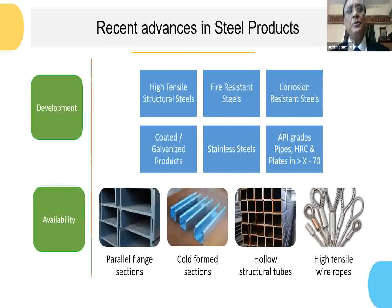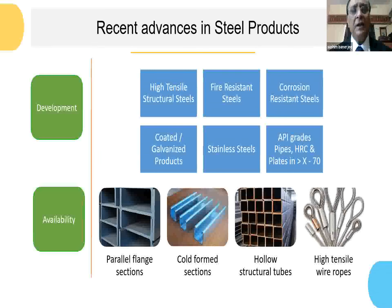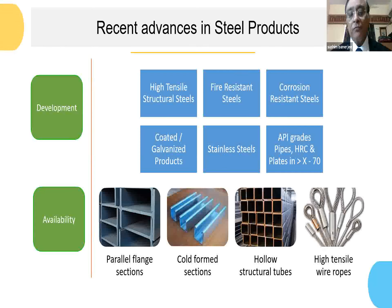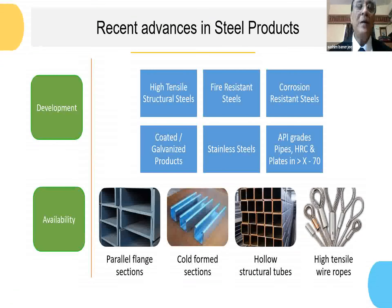From the supply side, steel producers are already supplying high-tensile structural steels, fire-resistant steels, corrosion-resistant steels, coated and galvanized products, and stainless steel including stainless steel bars. However, some big imports are still coming in for products like stainless steel more than 1,250 mm width in hot-rolled and cold-rolled, API-grade pipes, and hot-rolled coil and plate wanted in a big way by the oil and gas sector for casing pipes in more than X-70 grade. Parallel flange sections, cold-formed sections, hollow structural tubes by Tata Steel and others are being increasingly used in airport and other construction, and high-tensile wire ropes are also increasingly being used along with concrete. So on the supply side, a lot of advances are taking place, and on the demand side, the construction sector is moving toward a value-based model approach, and the Indian steel industry will go much faster along with the growth of construction and infrastructure.